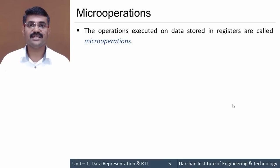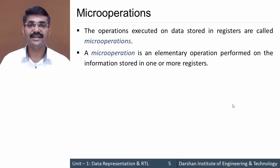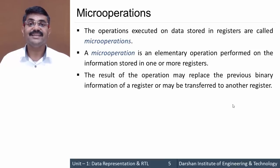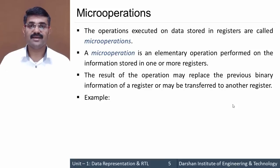Operations performed on data stored in registers are called micro operations. A micro operation is an elementary — that is, very basic — operation. Behind the high-level statement C = A + B, the actual addition at the register level is a micro operation. Micro operations are performed on registers, and their results are also stored back in a register, potentially replacing the previous value.